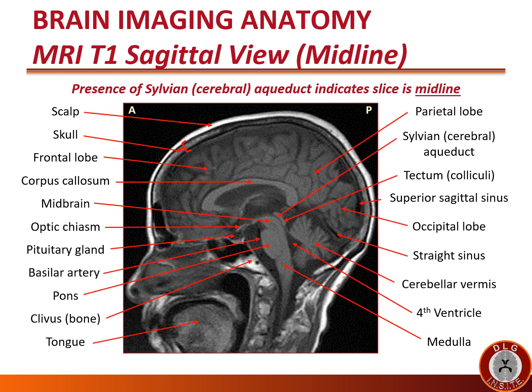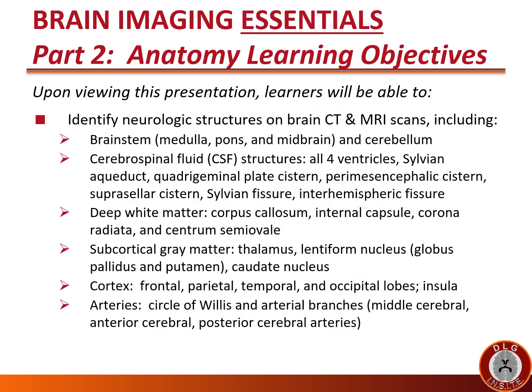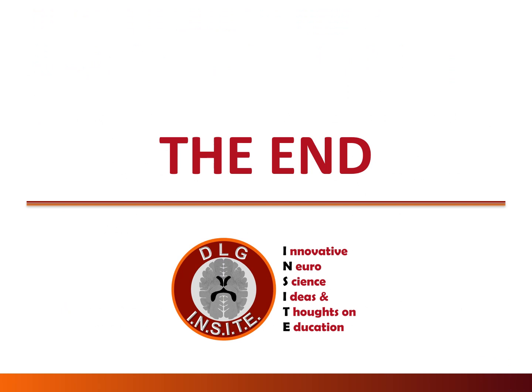This slide shows all of the structures on the MRI T1 sagittal view, labeled with their arrows. After viewing this presentation, you should be able to accomplish the stated learning objectives. This is the end of this presentation, a production of DLG Insight — Innovative Neuroscience Ideas and Thoughts on Education.